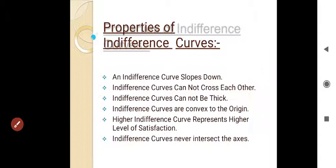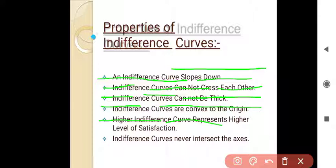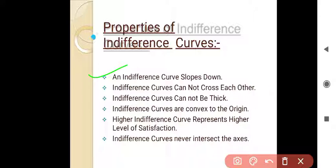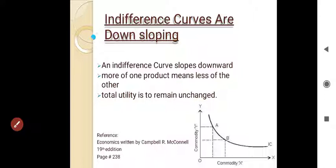Properties of indifference curve: an indifference curve slopes down; indifference curves cannot cross each other; indifference curves cannot be thick; indifference curves are convex to the origin; higher indifference curve represents higher level of satisfaction; and lastly, indifference curves never intersect the axis. Let's study all these properties in detail.